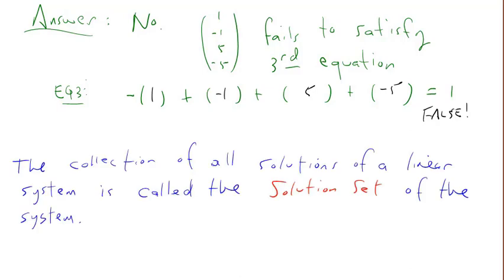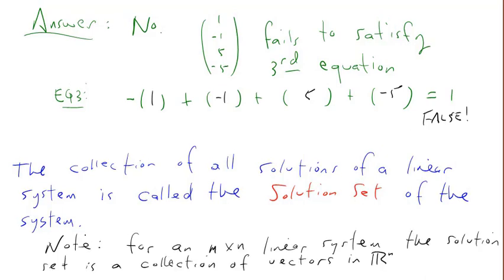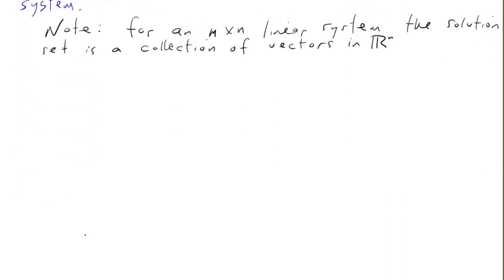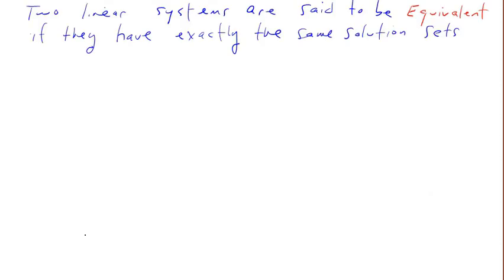The collection of all solutions of a linear system is called the solution set of the system. For an m by n linear system, the solution set is a collection of vectors in ℝⁿ, because there are n variables. Two linear systems are said to be equivalent if they have exactly the same solution sets.